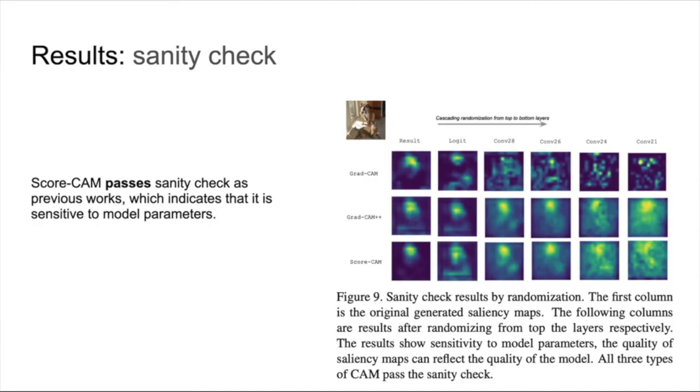In sanity check, we randomize the parameters of network from top to bottom layer. In the experiment, Score-CAM passes sanity check as previous works, which indicates that it is sensitive to model parameters.